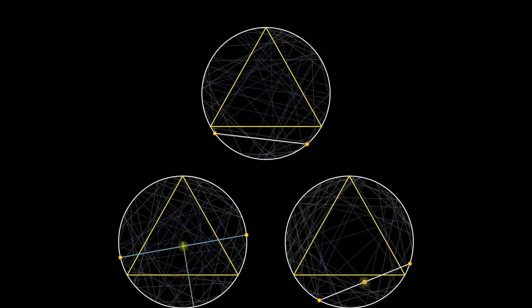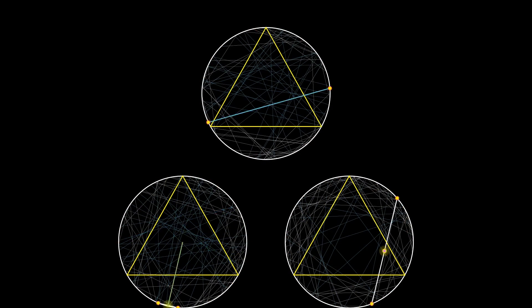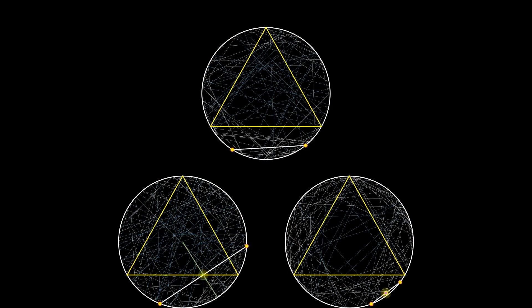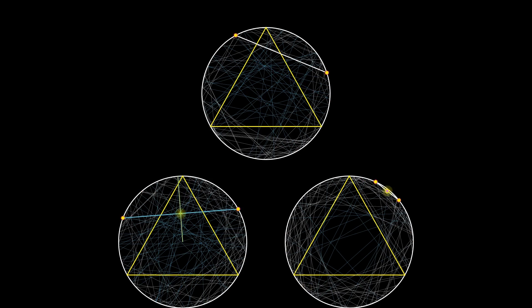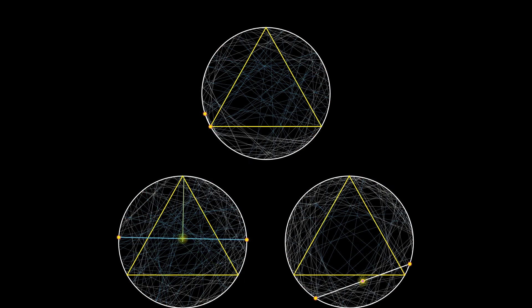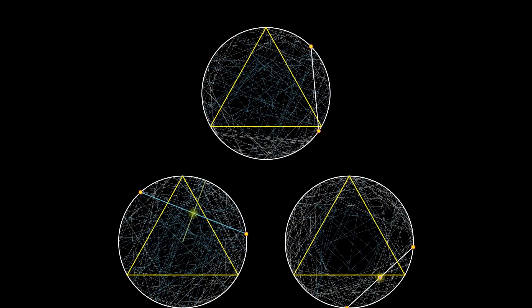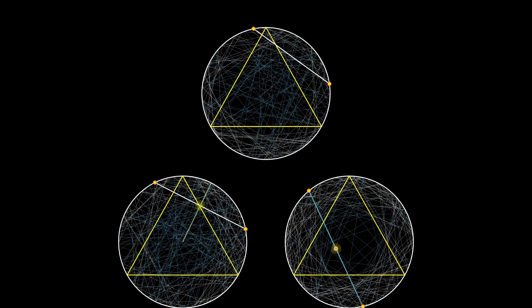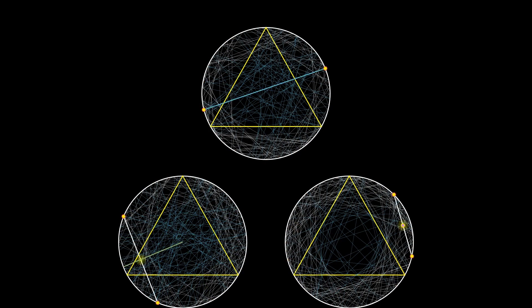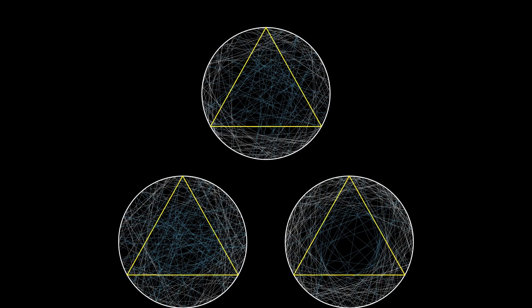Numberphile made a video on this topic, in which Grant showed how the same question can have three possible answers. The paradox shows what happens when we take the words 'at random' a bit too casually.